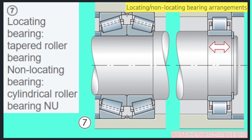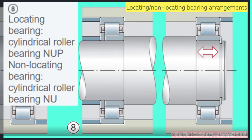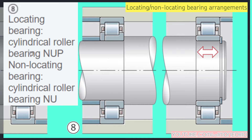The last example: the non-locating bearing is a cylindrical roller bearing, which is all blocked in the housing but can slide axially. I hope you enjoyed this. See you next time.